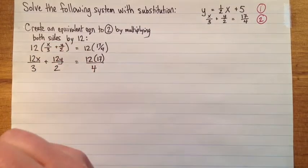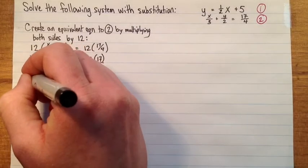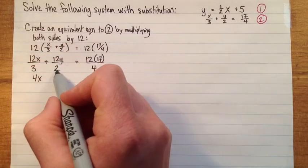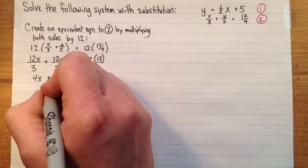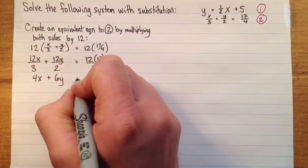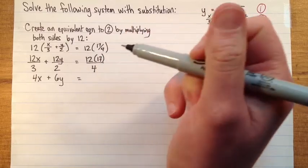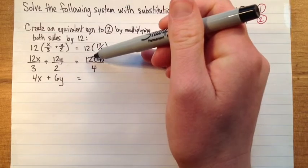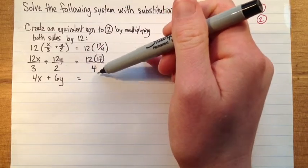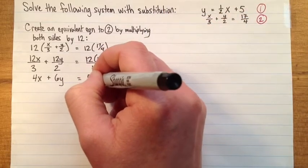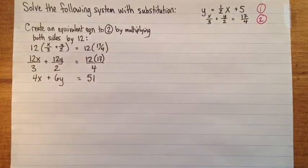Now, if I chose the right number, the twelve, then all of these coefficients and terms here should simplify to whole numbers. So twelve over three, that's four. So 4x and twelve divided by two is six. And 4x plus 6y equals, I could multiply twelve by seventeen and divide by four, but it's easier if I do twelve divided by four first. So that's three. And three times seventeen is fifty-one. There we go.